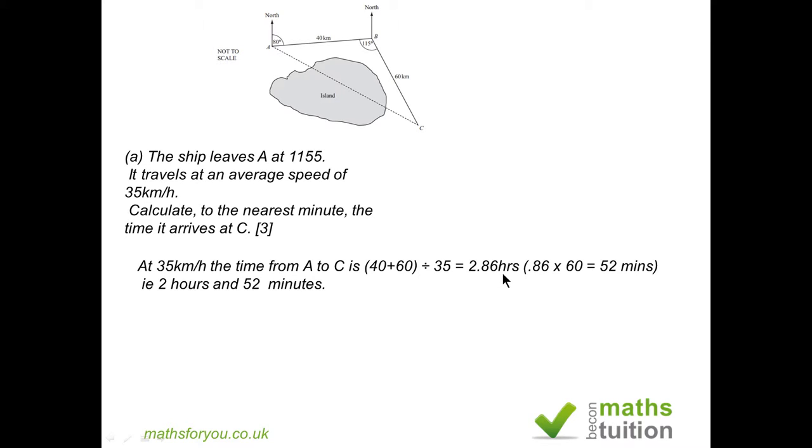The question asks for the answer to be in the nearest minute, so you multiply 0.86 by 60 because there are 60 minutes in an hour and you have 52 minutes to the nearest minute. So if you take the vessel from A to B to C, it's about 2 hours and 52 minutes. Now if the vessel left at 1155 and it takes 2 hours and 52 minutes, it will arrive at point C at about 1447 hours, because if you add 1155 to 2 hours and 52 minutes you end up with 1447 hours.